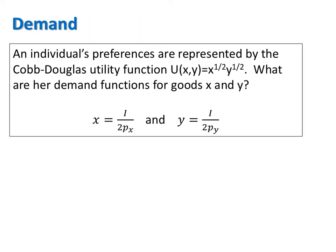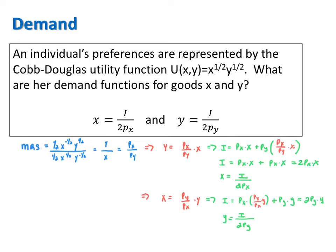Before I discuss the elasticity of demand, remember that we can use constrained utility maximization techniques to derive a consumer's demand functions for good x and y given a utility function. For example, suppose an individual's preferences are represented by the Cobb-Douglas utility function u equals x to the one-half times y to the one-half. We can derive her demand functions for x and y by using either the Lagrangian method or by starting with the tangency condition — the MRS set equal to the MRT — solving for one good and plugging into the budget constraint to solve for the other. Here's a reminder of what that process looks like.